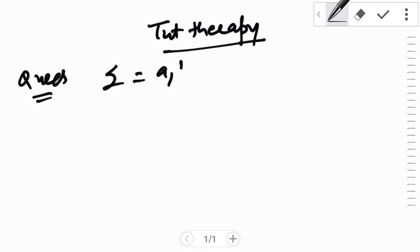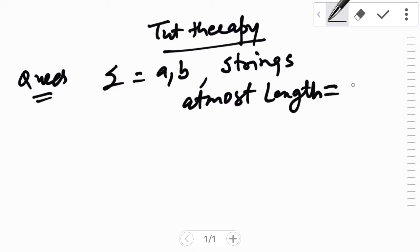Hello all of you, welcome back to Tube Therapy. In this tutorial we are going to construct a DFA over the alphabet A, B in which all the strings are accepted which are of at most length equal to 2.